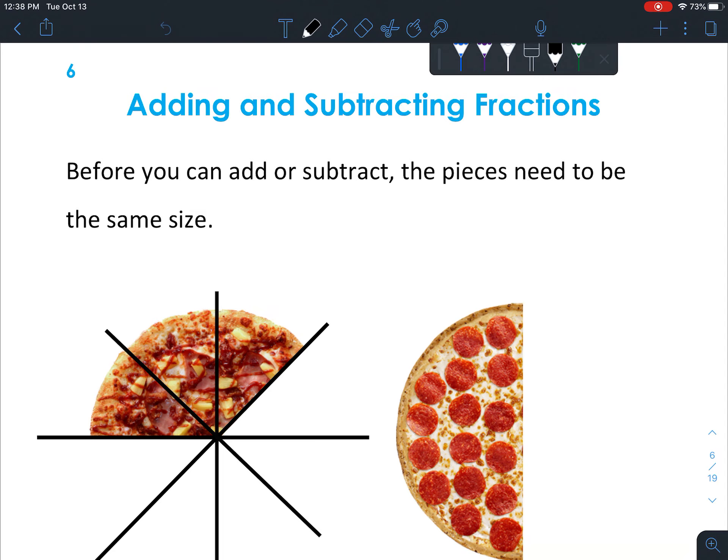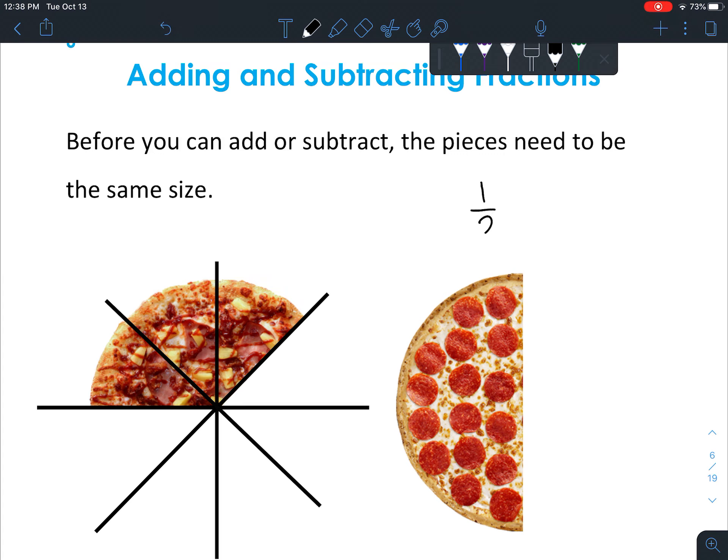So let's compare these two. This technically would be one half, because we've cut that pizza in half. This one would technically be one, two, three out of four, five, six, seven, eight pieces.